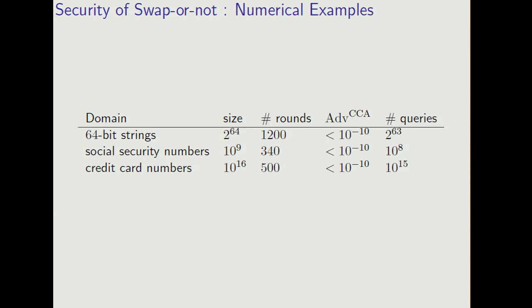First, some concrete numbers. If we do 1,200 rounds of our cipher, then we can encipher 64-bit strings and give an advantage of less than 10 to the minus 10, even if the adversary queries half the domain.